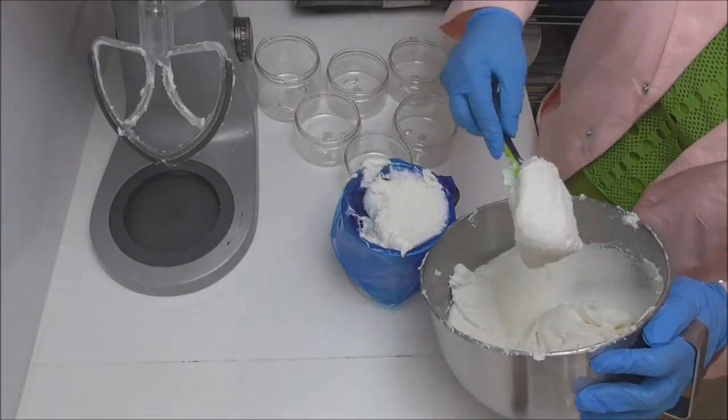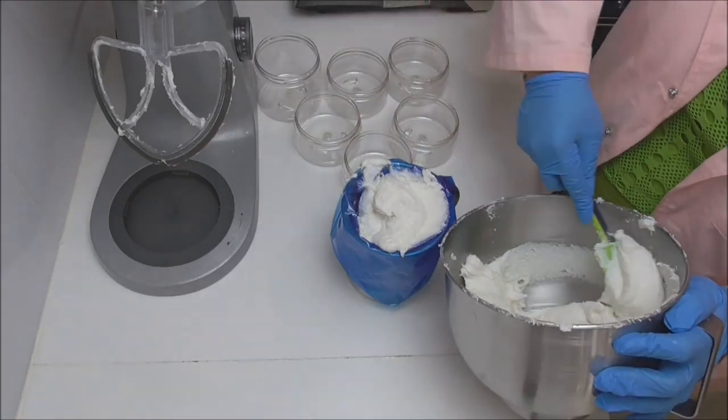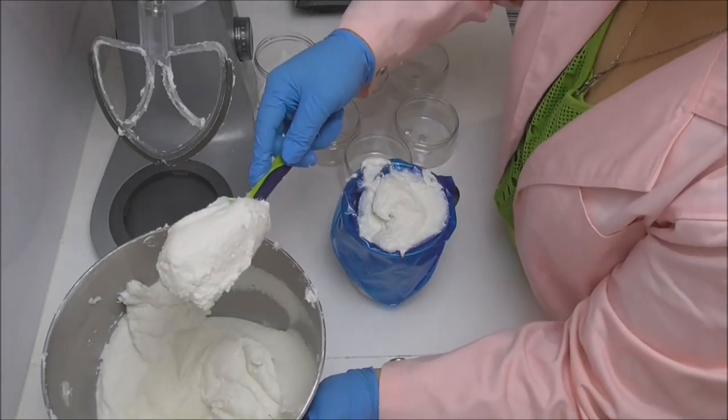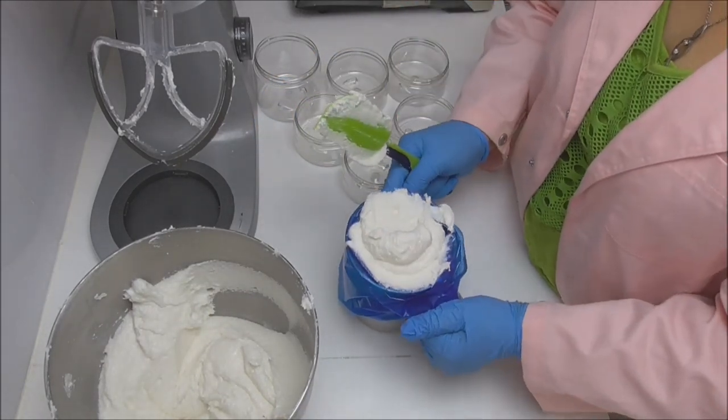So when you do a sugar scrub, you can spoon these into the pots. I find that I am particularly messy doing this. So I like to put mine into a piping bag and pipe it into the pots.